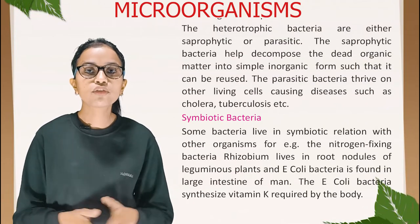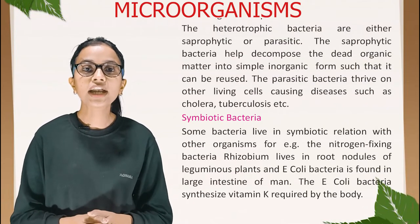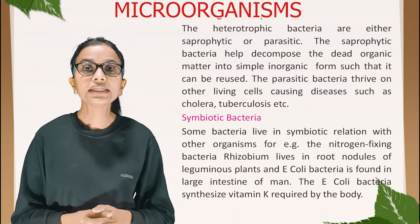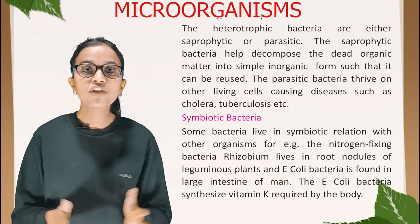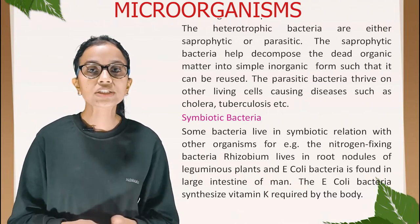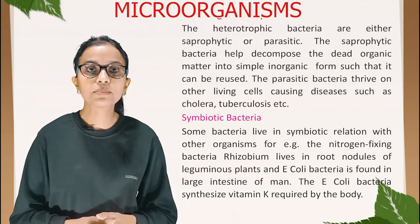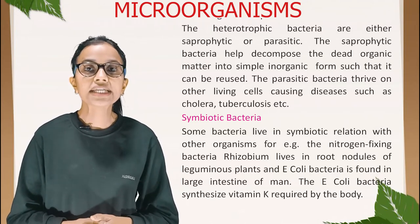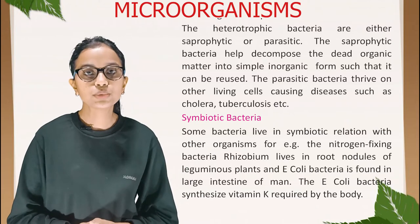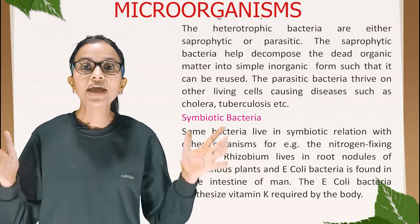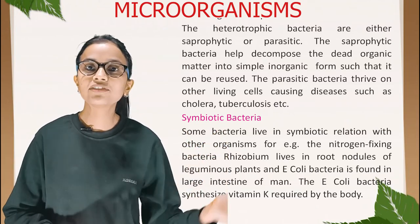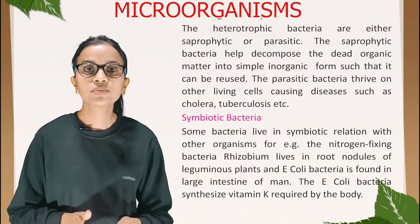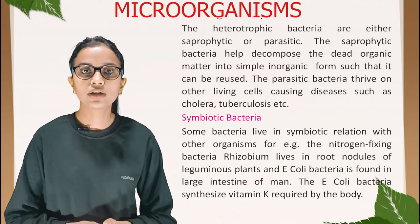The heterotrophic bacteria are either saprophytic or parasitic. Saprophytic bacteria help decompose dead organic matter into simple inorganic forms so that it can be reused. Parasitic bacteria thrive on other living cells, causing diseases such as cholera, tuberculosis, etc.